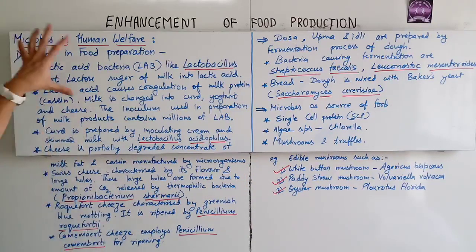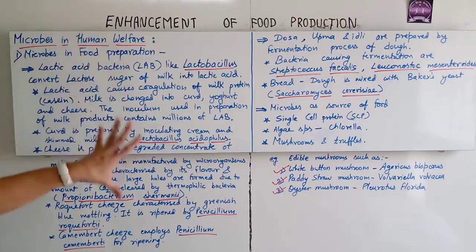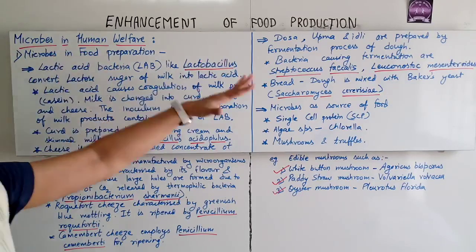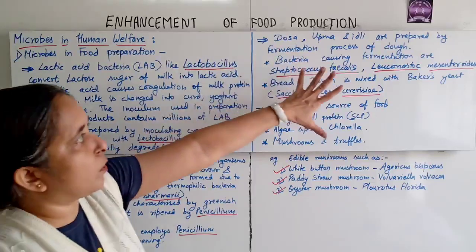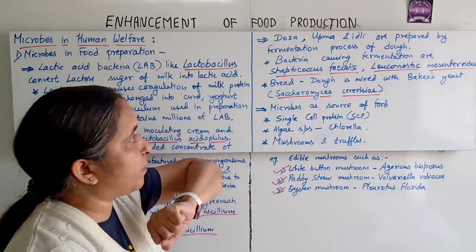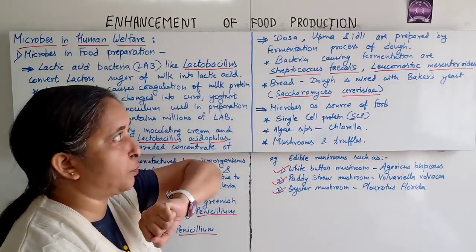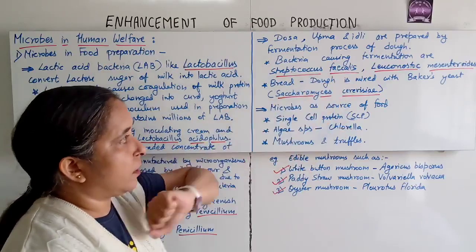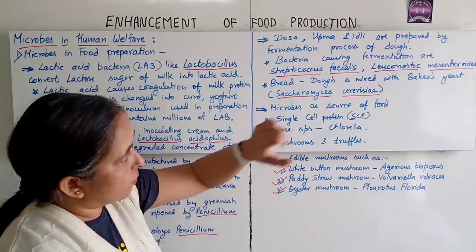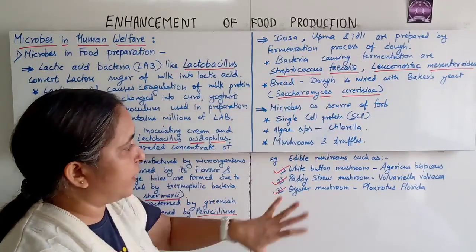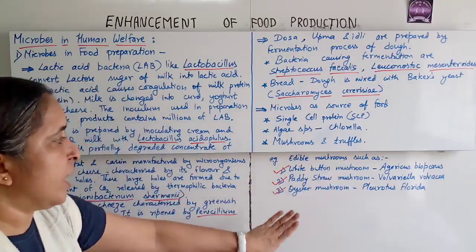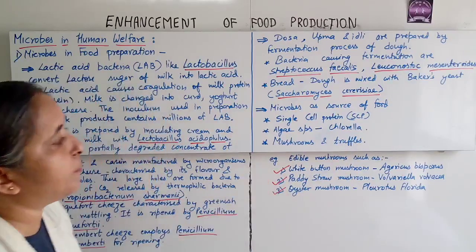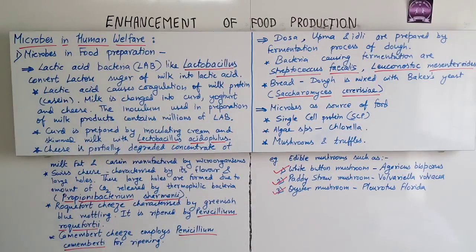So these are the microbes in human welfare — under that, microbes in food production covering dairy products, and Dosa, Upma and Idli prepared by fermentation. These are the botanical names of the bacteria and microbes as a source of food, with examples of edible mushrooms. Please go through these names.